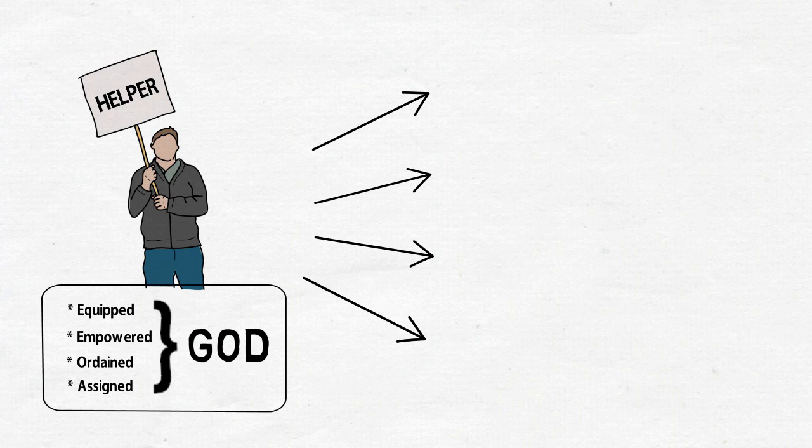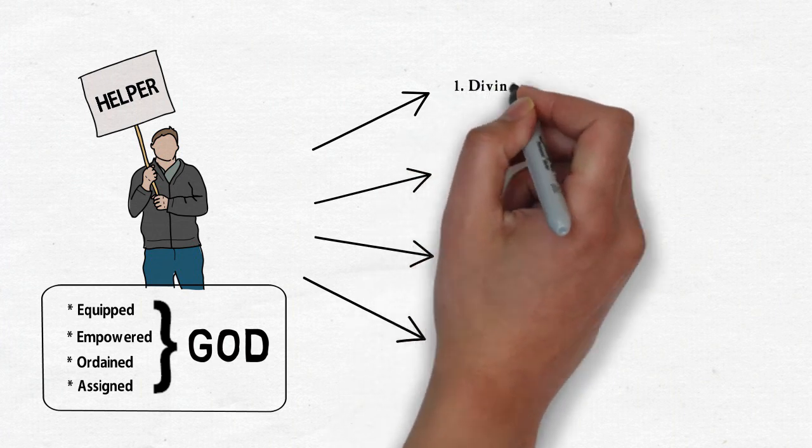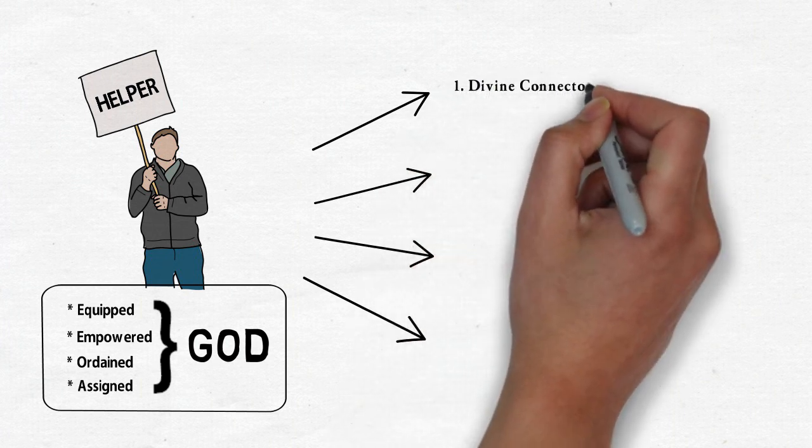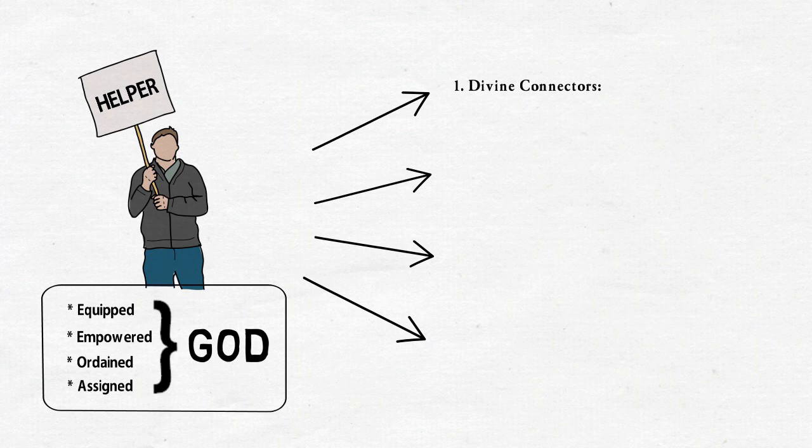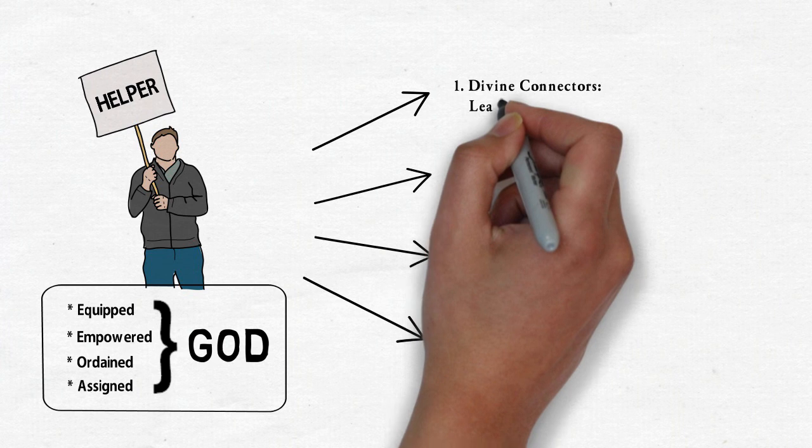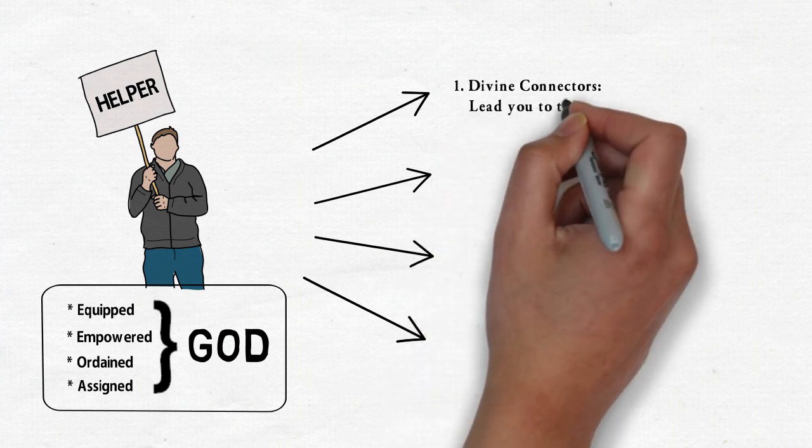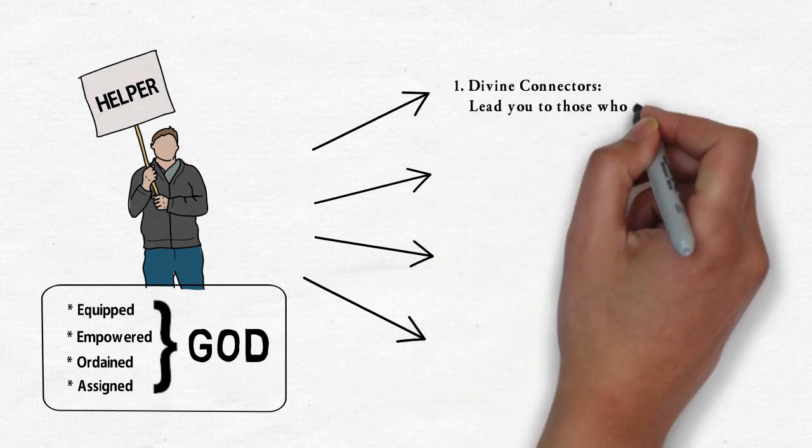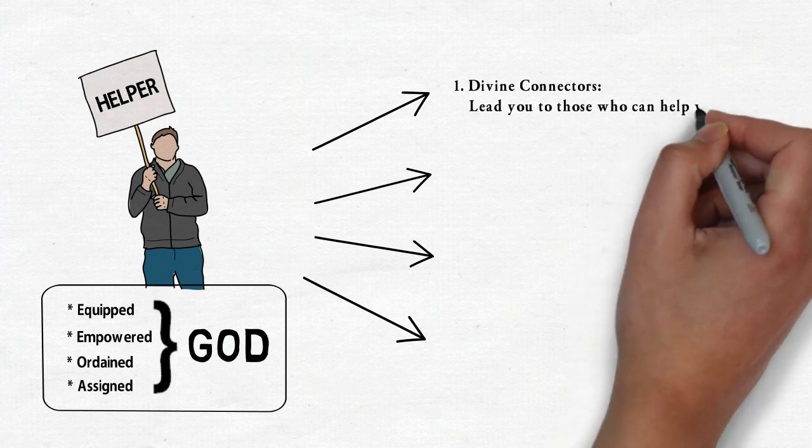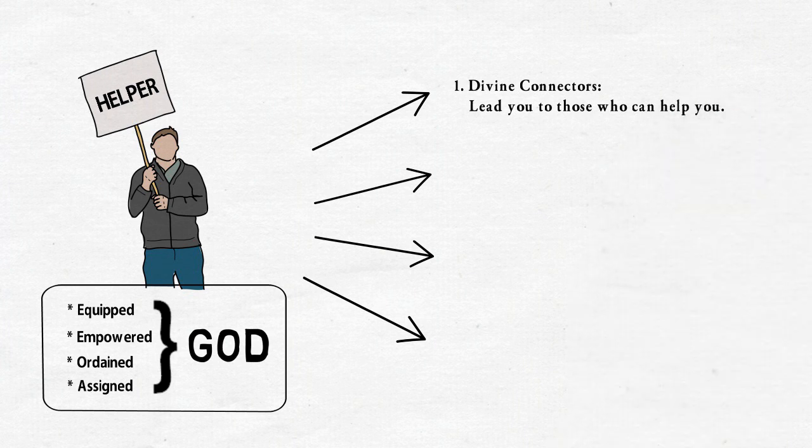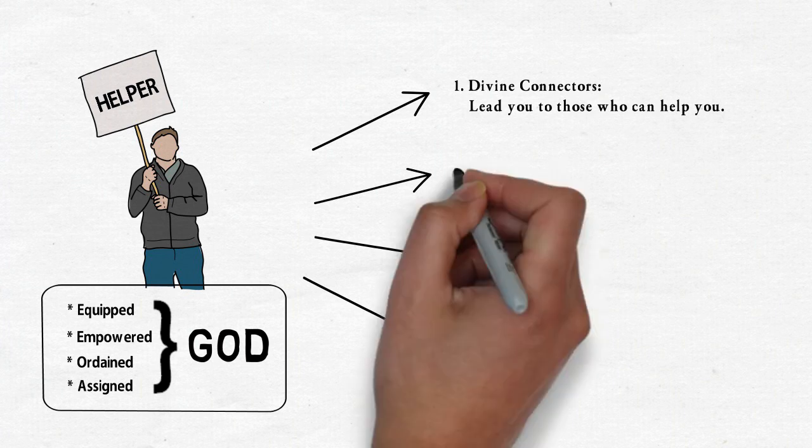The first kind and type of destiny helpers are called divine connectors. Divine connectors do not have the power to help you directly, but they can lead you to those who have what it takes to help you. The key to receiving from divine connectors is meekness and discernment, because they will always come in forms that may not be impressive.